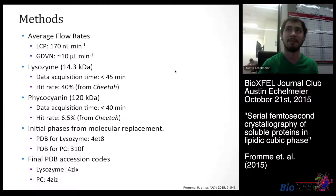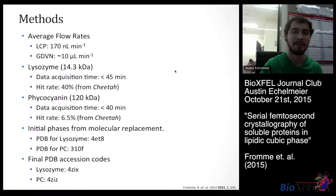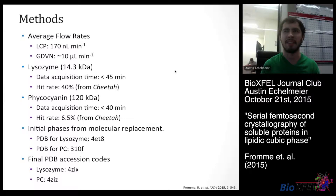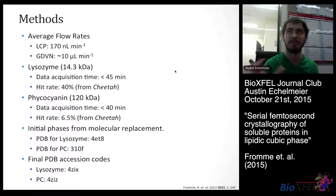An important note is that the LCP flow rate was 170 nanoliters per minute, significantly slower than the approximately 10 microliters per minute with the GDVN — it flows much more slowly, like toothpaste. They had two samples: lysozyme, which is relatively small, and phycocyanin, which is relatively large. Both data sets were acquired in under an hour. Hit rates were about 40% for lysozyme and 6.5% for phycocyanin. Although instinctively hit rates should be close to 100%, going much higher than 40% increases the probability of hitting multiple crystals simultaneously, which is bad for data analysis — so keeping it between 30% and 40% is ideal.